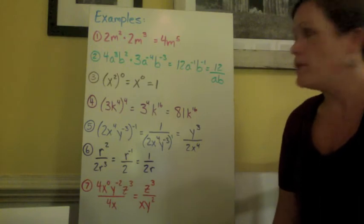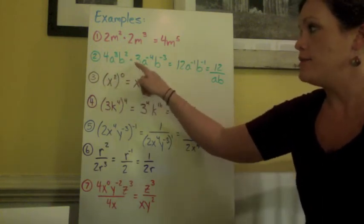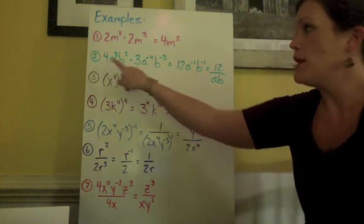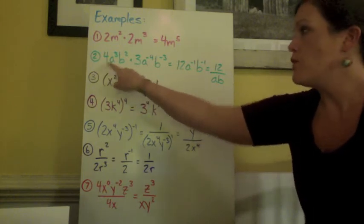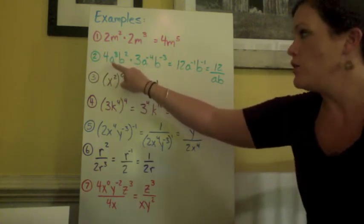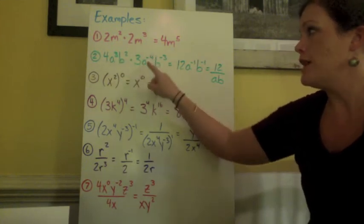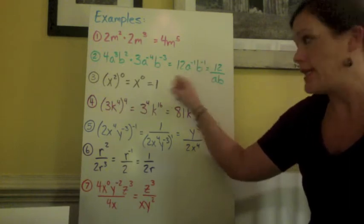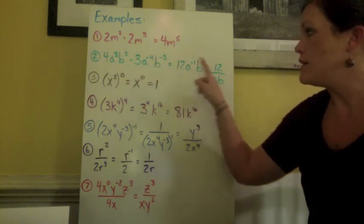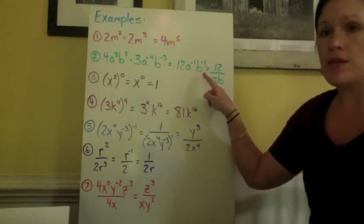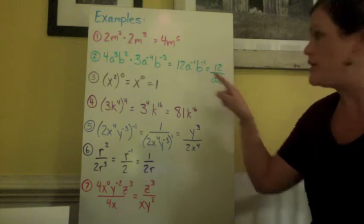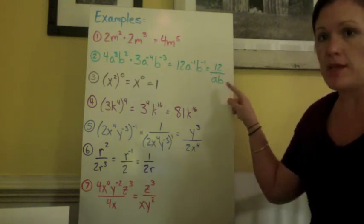In example 2, we have 4a cubed b squared times 3a to the negative fourth power b to the negative third power. Again, we need to multiply the numbers out front, the coefficients. So we have 4 times 3 would give us 12. Then we add the exponents together. So we have a cubed and a to the negative fourth power. 3 plus negative 4 equals a to the negative 1 power. We have b squared and b to the negative third power, so 2 plus negative 3 equals b to the negative 1 power. Now we cannot leave negative exponents. We need to write it as 12 and move the a and the b to the denominator to make them positive. So we have 12 over ab.